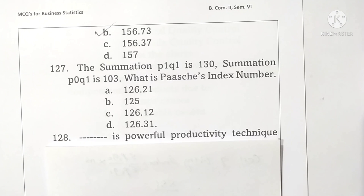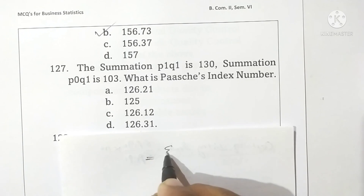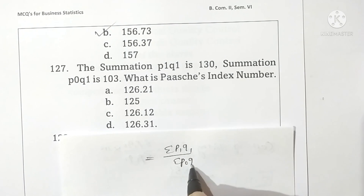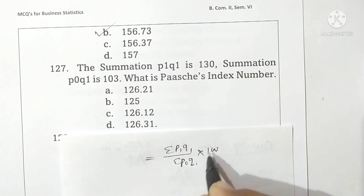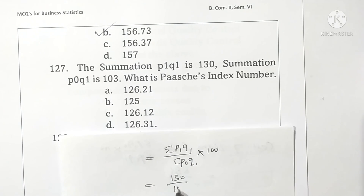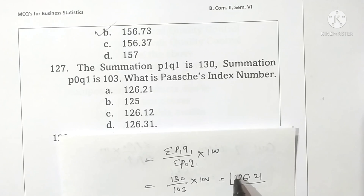Question 127: summation P1Q1 is 130 and summation P0Q1 is 103. What is the Paasche's index number? The Paasche's index number formula is summation P1Q1 divided by summation P0Q1, into 100. Putting the values: 130 divided by 103 into 100 gives 126.21. Students may use the calculator. Option A is correct.